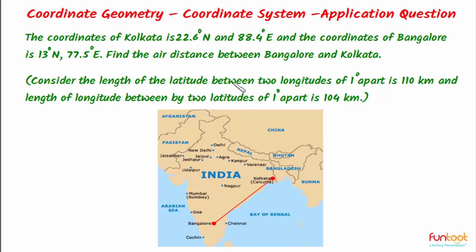We have been provided additional information that the length of the latitude between two longitudes 1 degree apart is 110 km, and the length of longitude between two latitudes 1 degree apart is 104 km.